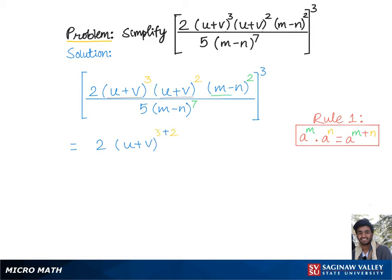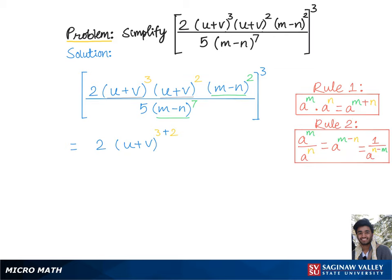Using rule 2, according to which we will get in the denominator 5 times the common base m minus n raised to the 7 minus 2, and the whole group cubed, which is equal to 2 times u plus v to the 5 divided by 5 times m minus n raised to the 5, and the whole group cubed.